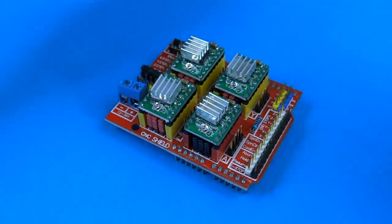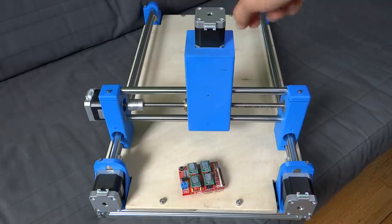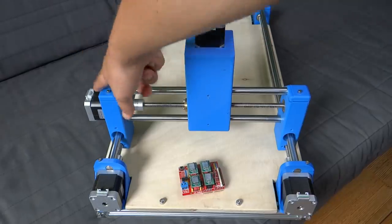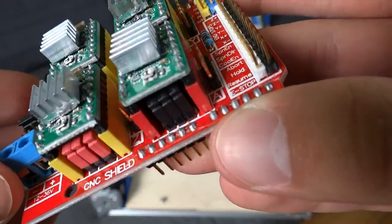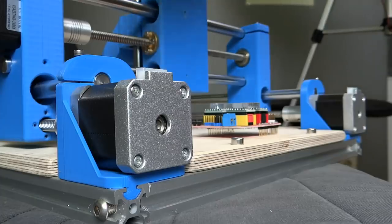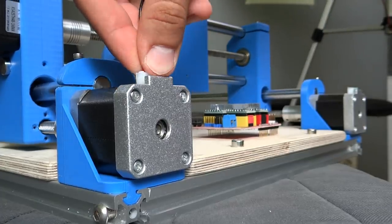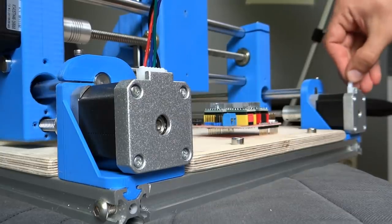Make sure that you connect them in a proper way. This is z-axis, that's x-axis, and those two motors are for y-axis. They are also labelled on the CNC shield. If you use the same motors and shield as I do, here is how everything should be connected.